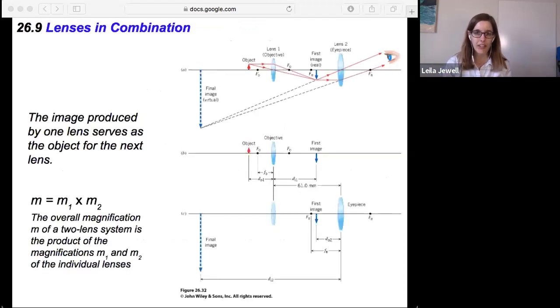All right. Now what if we have those lenses in combination? Section 26.9 gets at that idea. And the key takeaway to be able to solve two lenses in combination is that the image produced by one lens will serve as the object for the next lens.